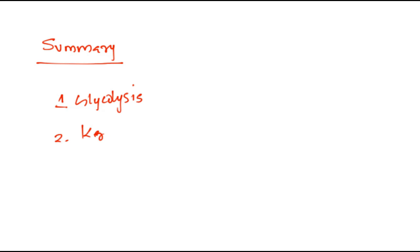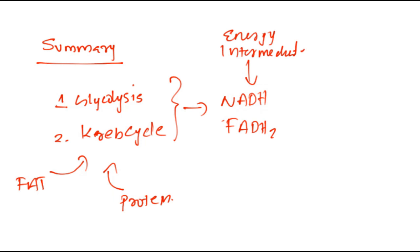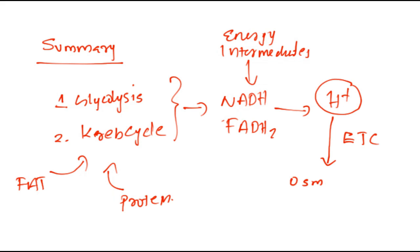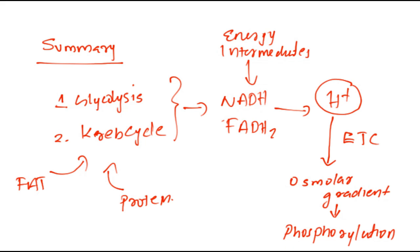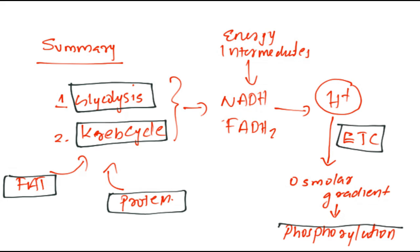To summarize: we first do glycolysis (breaking down glucose), then the Krebs cycle, fat oxidation, and protein utilization — all of which produce NADH and FADH2, the energy intermediates. These energy intermediates give H⁺ ions, which are pumped by the electron transport chain, creating an osmolar gradient across the inner and outer membrane, used for phosphorylation to produce ATP. In this video series, the upcoming topics will be glycolysis, Krebs cycle, fat oxidation, protein utilization, electron transport chain, and phosphorylation.